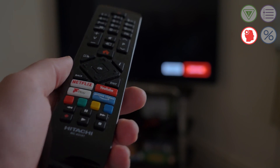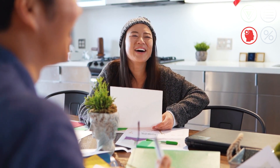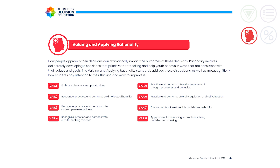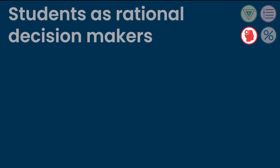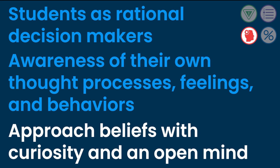Or maybe they need to get an after-school job to save money for college, but instead of taking the job that pays more for less time, they take a lower paying job so they can work with their friend, which leads to them working more hours. The standards in this domain are about developing decision makers who adopt goals that align with their values, form accurate judgments, and take actions that are consistent with these values. When we talk about helping students be more rational, this is not intended to refer to decision makers who are cold or without feelings, but rather ones who are aware of and understand their own thought processes, feelings, and behaviors, and who approach their beliefs and assumptions with curiosity and an open mind.